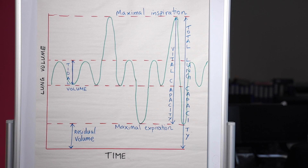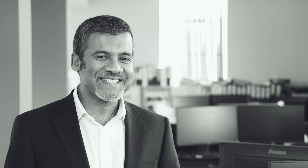So what goes up, what comes down, and what remains the same in pregnancy compared to the pre-pregnancy state? Oxygen tension, minute ventilation, tidal volume, inspiratory capacity, and arterial pH all go up. On the other hand, carbon dioxide tension, functional residual capacity, and airway resistance go down.